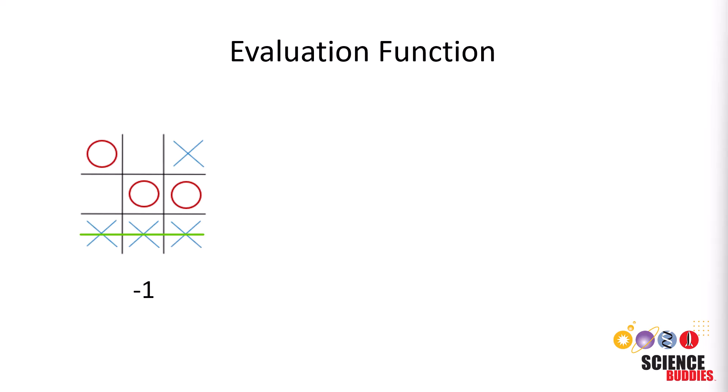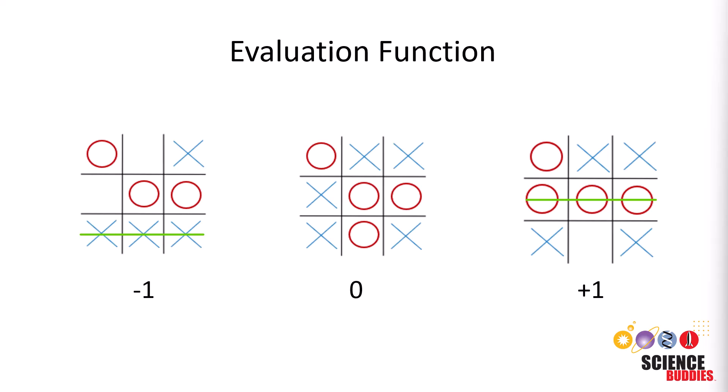At the heart of the algorithm lies the evaluation function, which is responsible for assigning a score to each possible board state. This score is the algorithm's way of quantifying how favorable or unfavorable a given state is. When the evaluation function looks at the board, it interprets the current state of the game. A positive score implies an advantage for player O. The algorithm sees potential victory.